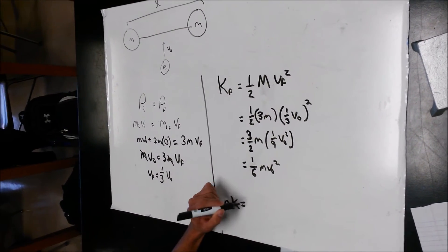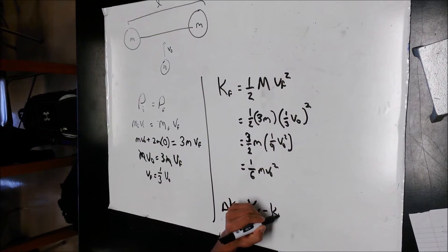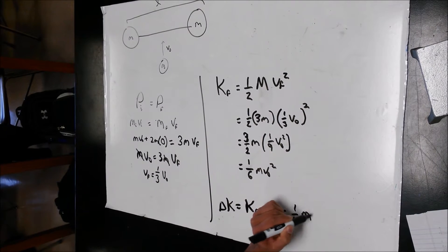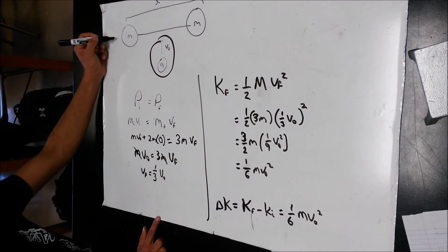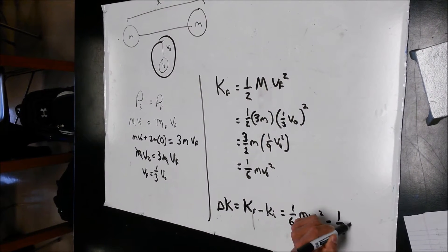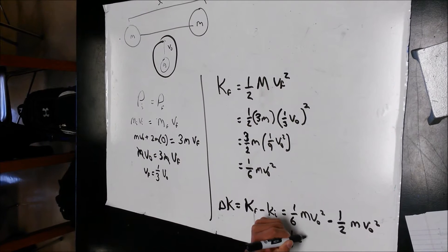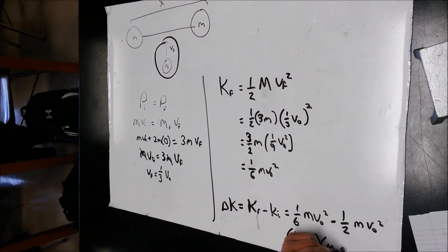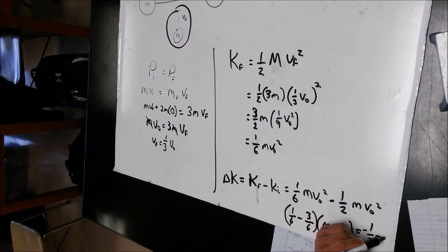The next part of the problem is to find the change in kinetic energy, which is KE final minus KE initial. We know KE final is one-sixth M V0 squared. The initial kinetic energy is just one-half M V0 squared, since the bar is at rest. Subtracting the two, you get one-sixth minus three-sixths M V0 squared, which equals negative one-third M V0 squared.